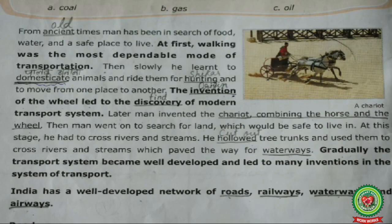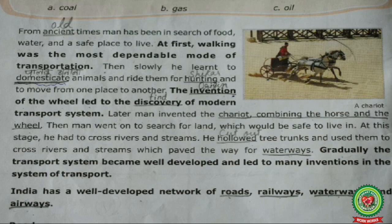Moving forward: 'Then men went on to search for land which would be safe to live in. At this stage, he had to cross rivers and streams. He hollowed tree trunks and used them to cross rivers and streams, which paved the way for waterways. Gradually, the transport system became well developed and led to many inventions in the system of transport.' Underline 'hollowed' and write 'cut out' there.